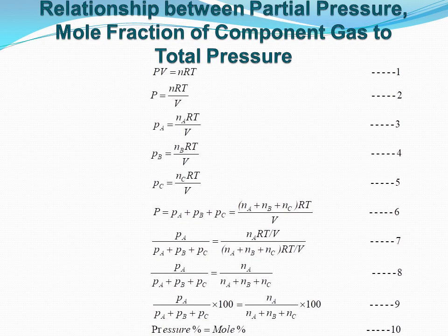Adding these three equations, we get P = P_A + P_B + P_C = (N_A + N_B + N_C)·RT/V. Dividing the equation for P_A by the total pressure equation, and simplifying, we get P_A / (P_A + P_B + P_C) = N_A / (N_A + N_B + N_C). Multiplying both sides by 100, we find that pressure percent equals mole percent.